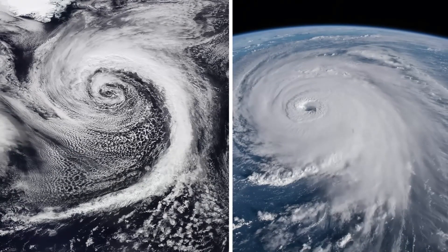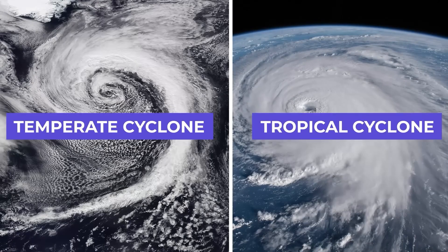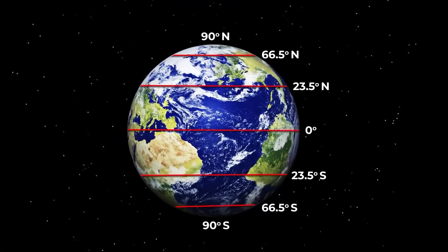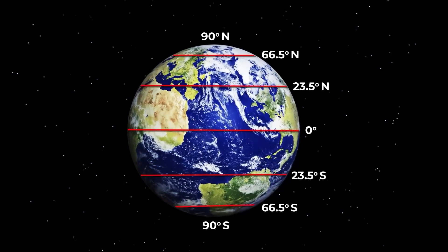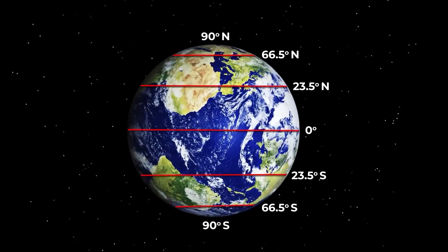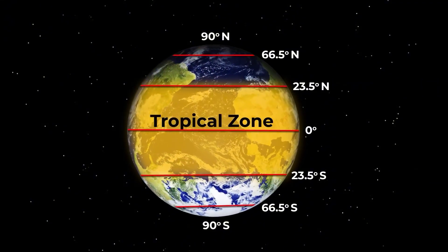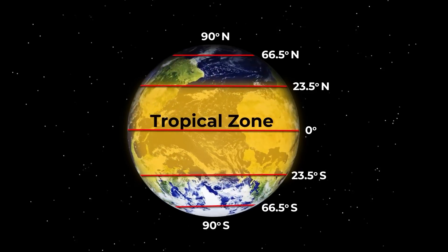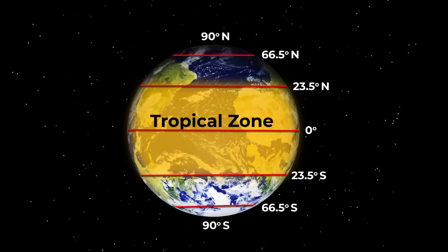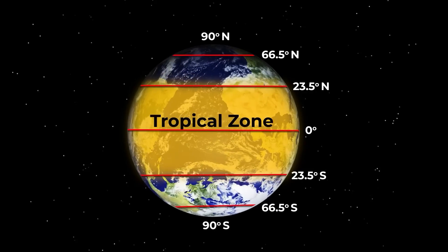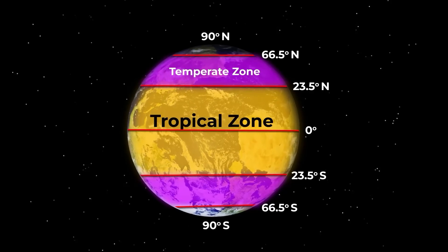If we talk about the classification of cyclones, they are of two types: temperate cyclone and tropical cyclone. To study the Earth better, some imaginary lines have been created. 23.5 degrees north and 23.5 degrees south are respectively called the Tropic of Cancer and Tropic of Capricorn. The area between these two lines is called the tropical zone. The regions towards 60 degrees north and south are called the temperate zone. Cyclones appearing in these zones are named accordingly.